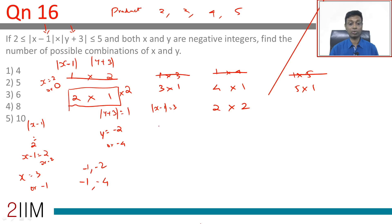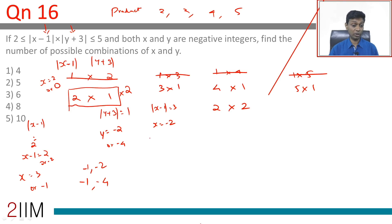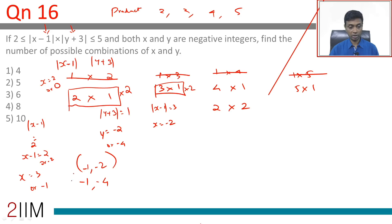If |x-1| = 3, then x = 4 (not valid) or x = -2. x = -2 works. For |y+3| = 1, y = -2 or y = -4 — two possibilities. So we have (-2, -2) and (-2, -4).